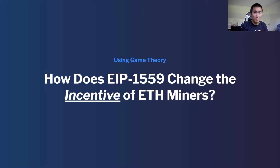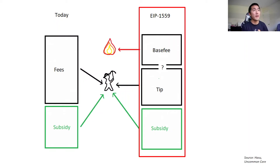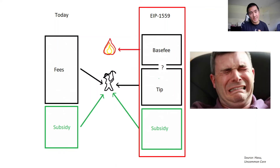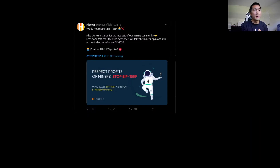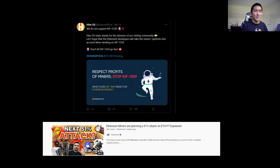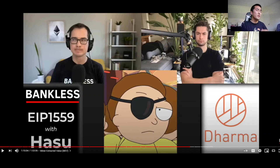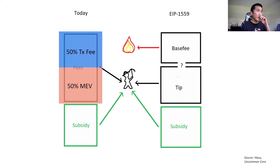EIP-1559 is going to change the incentives of ETH miners. ETH miners are unhappy — you see stuff like people saying stop EIP-1559, Ethereum is evil, we're going to make less money. There are even stories about miners planning a 51% attack on ETH. According to a recent Bankless podcast with Hasu, in today's gas fees, around half is coming from transaction fees and half from MEV. The transaction fee is like a fixed revenue for miners regardless of which block they mine, while the MEV aspect is variable.